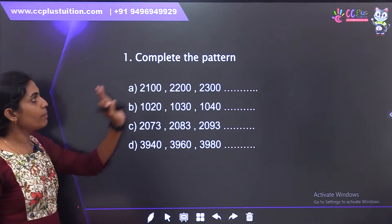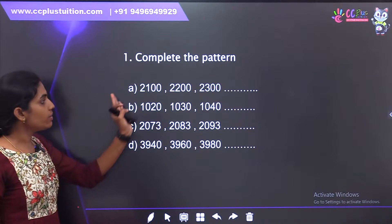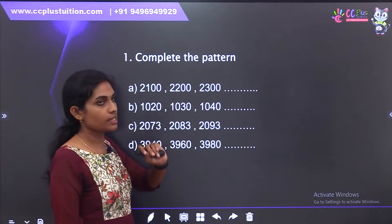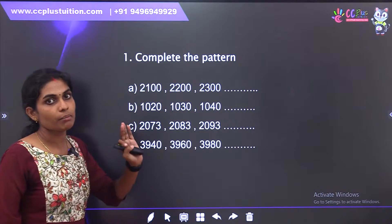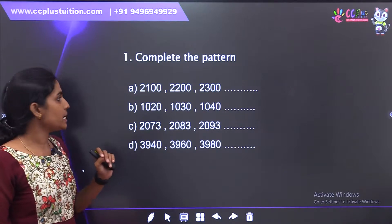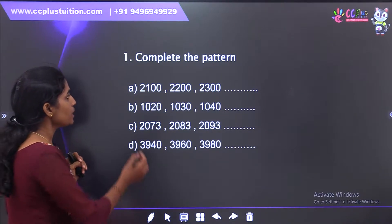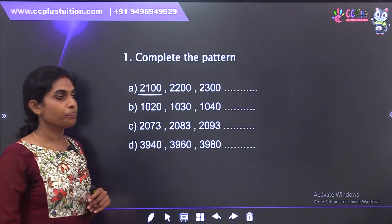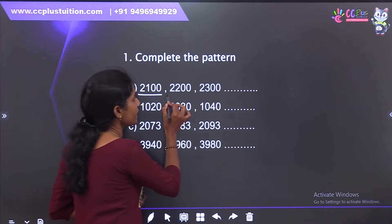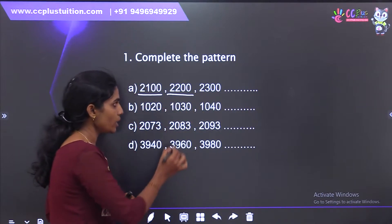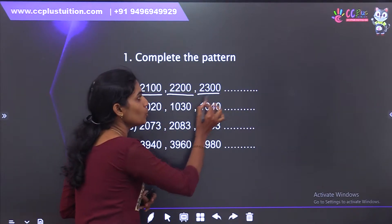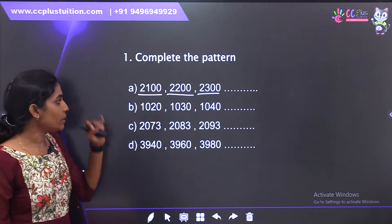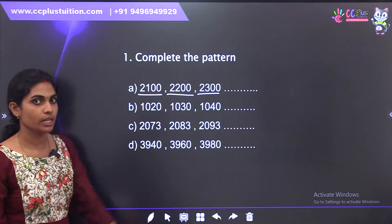We are going to start a test. I want to report the letter and a dash. We will complete the numbers. Now, you have to look at 1100. This is 300. These are 200. These are 300. How do you add this?